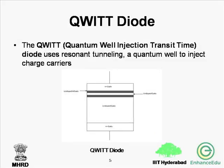Though the IMPATT diodes are very useful for high frequency operation, they have some major disadvantages. The process that governs the charge carrier injection, that is the avalanche breakdown, generates large electric noise which disturbs the proper operation of the device and its circuit. So an alternative was searched to solve this problem, and this is the QWITT diode, that is the quantum well injection transit time diode, and it uses resonant tunneling through a quantum well to inject the charge carriers.